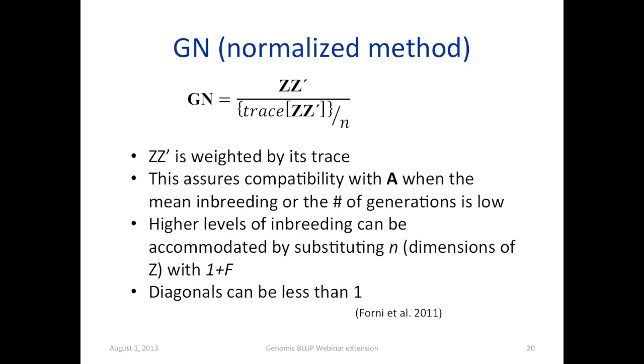So in the formula, N is the dimension of the matrix. If the inbreeding is high, N can be substituted with 1 plus the inbreeding coefficient. So the diagonal elements can be less than 1.